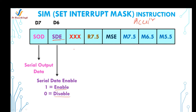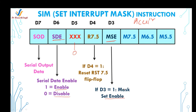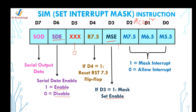The d5 bit is not in use, so we take value 0. The d4 bit is used to reset the RST7.5 flip-flop; if this bit value is 1, the RST7.5 interrupt will not be received by the microprocessor. The d3 bit enables masking of RST7.5, 6.5, and 5.5 only when it is 1; otherwise the d2 to d0 bits have no meaning. The d2 to d0 bits mask RST7.5, RST6.5, and RST5.5 respectively — if the value is 0, that interrupt is serviced by the microprocessor.